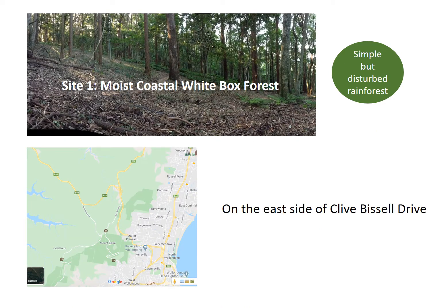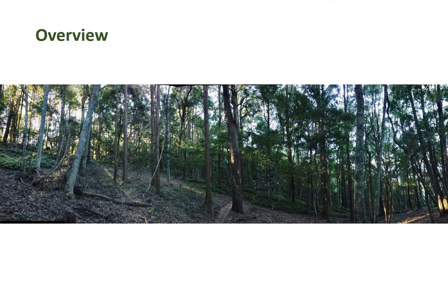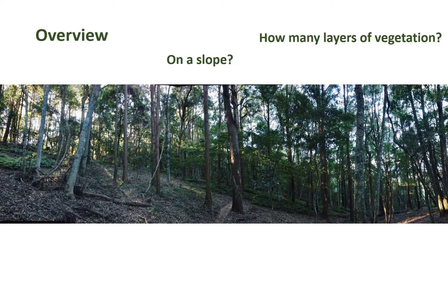The first site, if you wanted to try and find it, is on the east side of Clive Bissell Drive. When we go to a site we like to try to get an overview and think about what sort of topography there is. Is the site on a slope? This might affect the drainage. How many layers of vegetation can you see? This is something you can do when you walk anywhere, when you go on a bushwalk — thinking about these things.